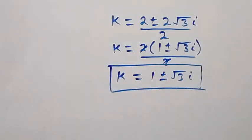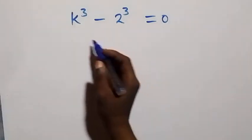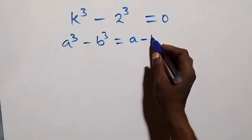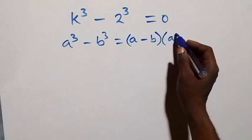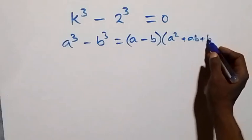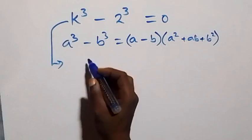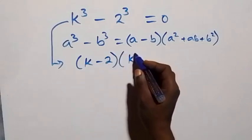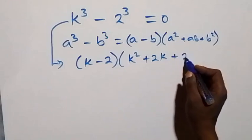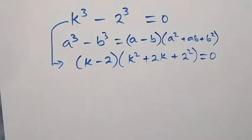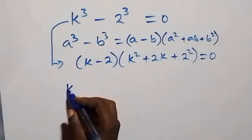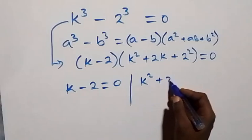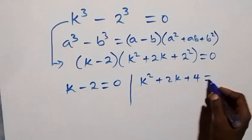Solving the second case, this follows from a³ minus b³ equals (a minus b)(a² plus ab plus b²). What we have becomes (k minus 2)(k² plus 2k plus 2²) equals 0, that is (k minus 2)(k² plus 2k plus 4) equals 0. From here the two cases are: k minus 2 equals 0, and k² plus 2k plus 4 equals 0.